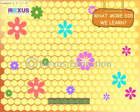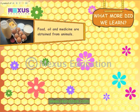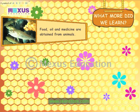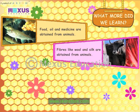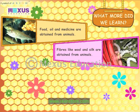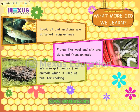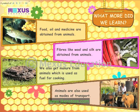What more did we learn? Food, oil and medicine are obtained from animals. Fibres like wool and silk are obtained from animals. We also get manure from animals which is used as fuel for cooking. Animals are also used as modes of transport.